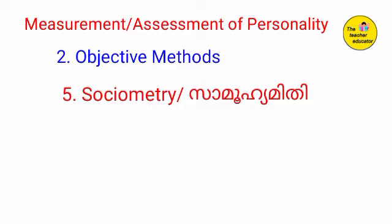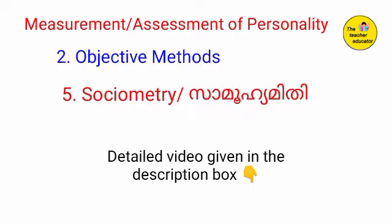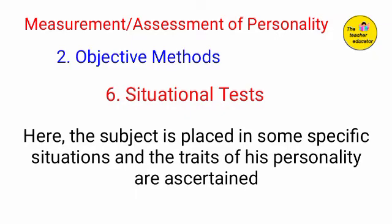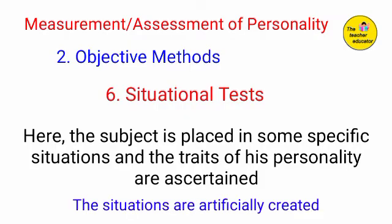Sociometry — please see the linked video in the description box for more detail. The second method is situational test. In a situational test, the subject is placed in some specific situations and the traits of his personality are ascertained. The situations are artificially created in which the individual is expected to perform acts related to personality traits under testing.